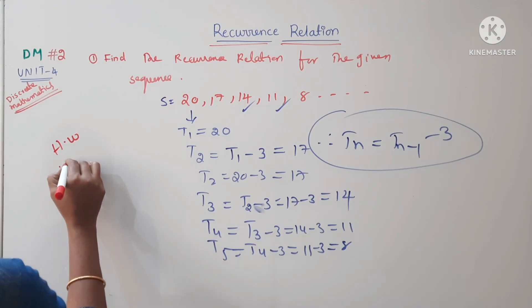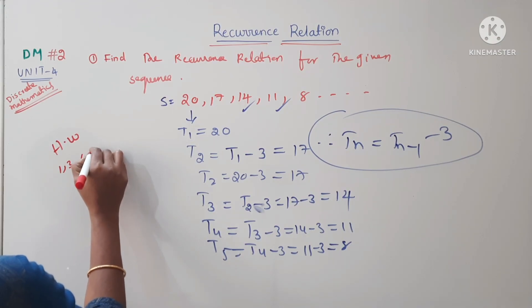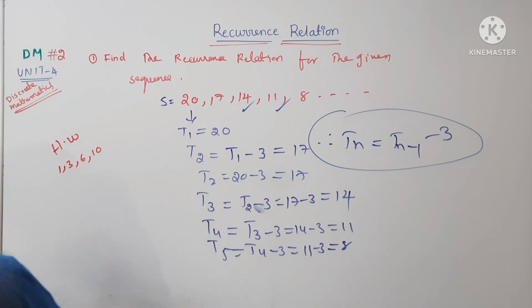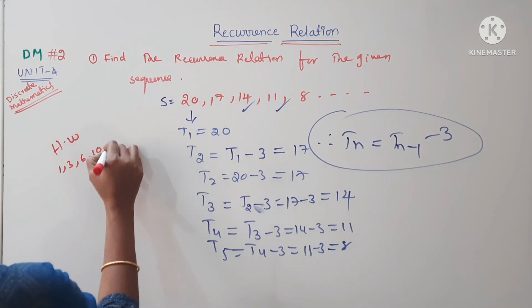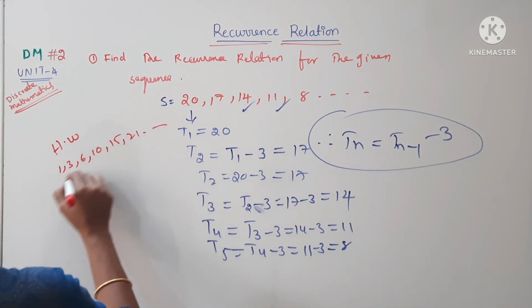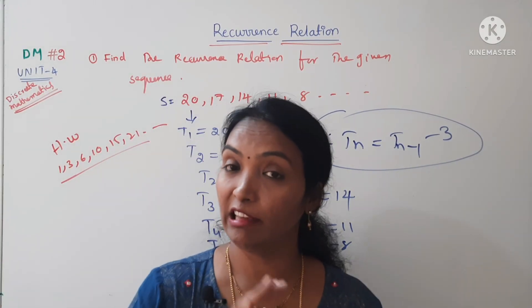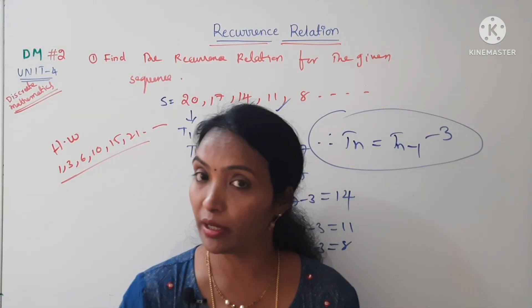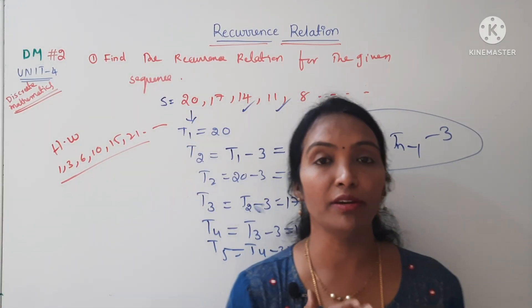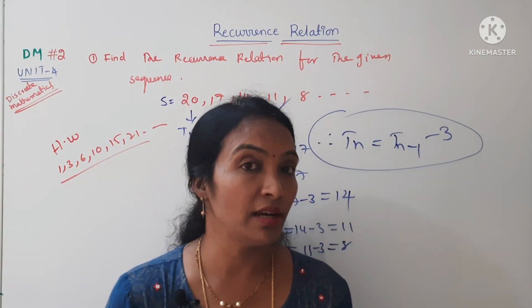One more problem — the last one. The given sequence is 1, 3, 6, 10, 15, 21. Find the recurrence relation for this sequence.